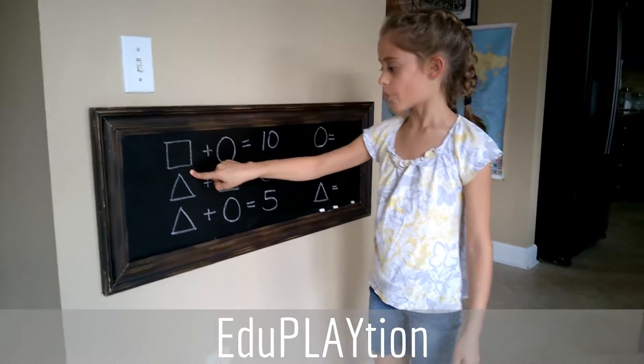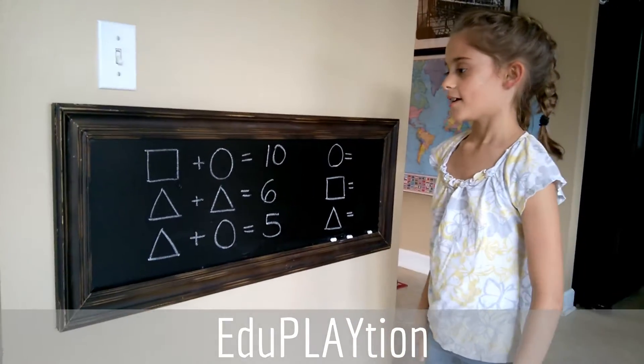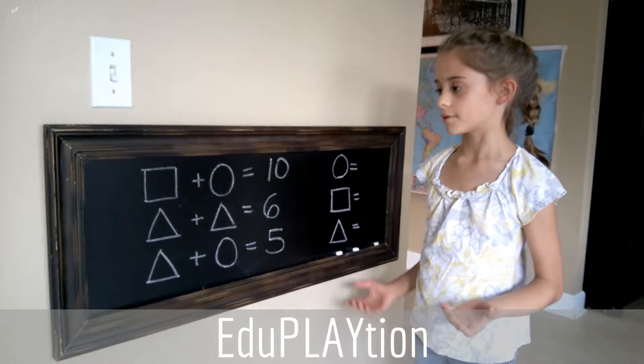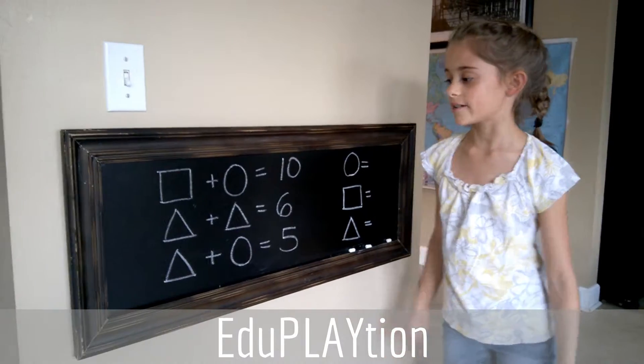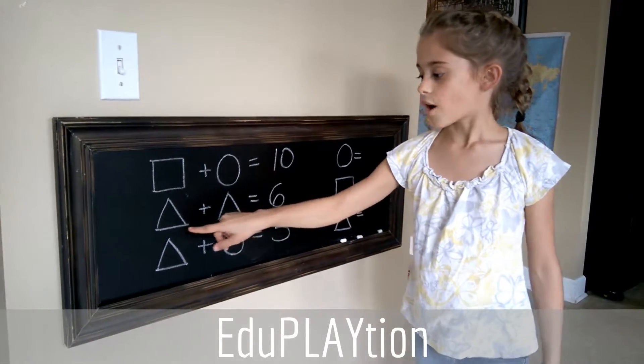I started with the square and the circle. Well, this was very confusing because there are two different shapes, so obviously they were two different numbers. They could have been 9 plus 1, 3 plus 7, or 4 plus 6. So I went to the second part of the problem with triangles.